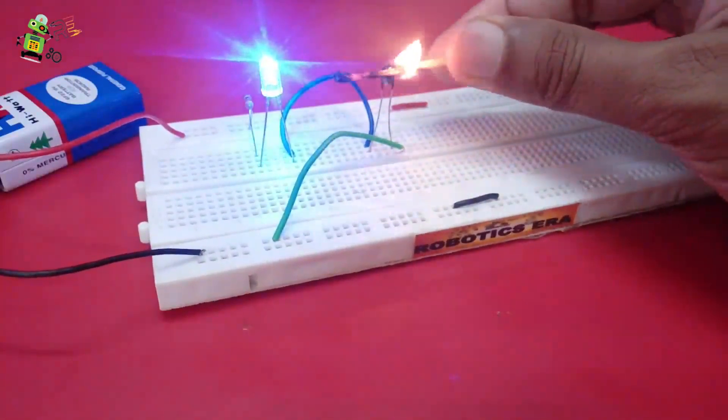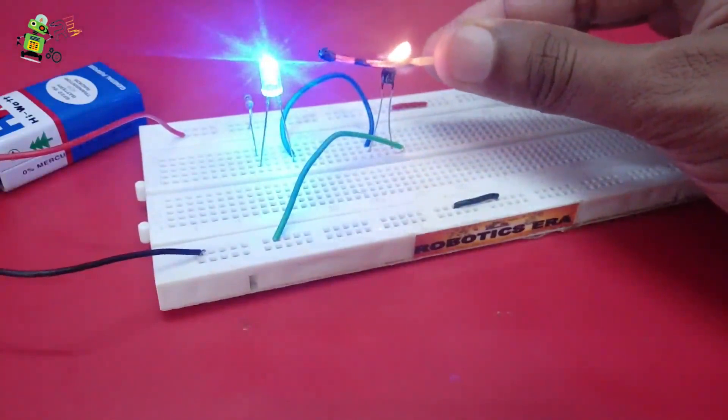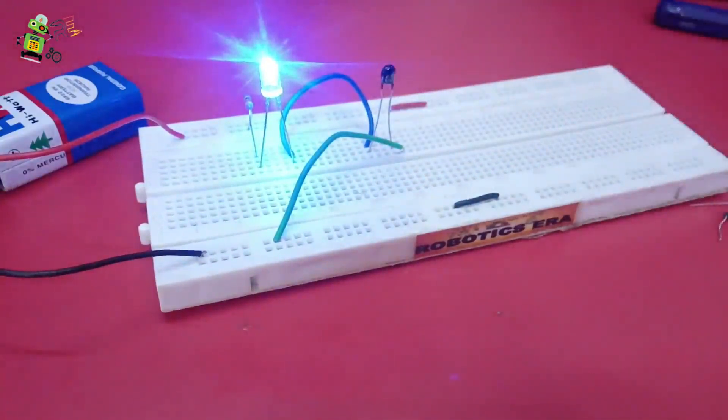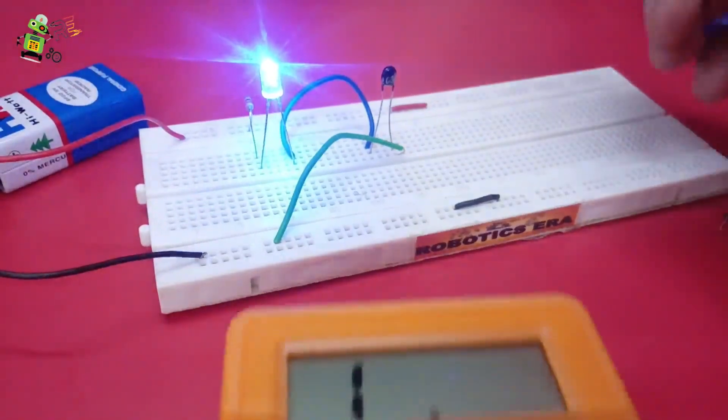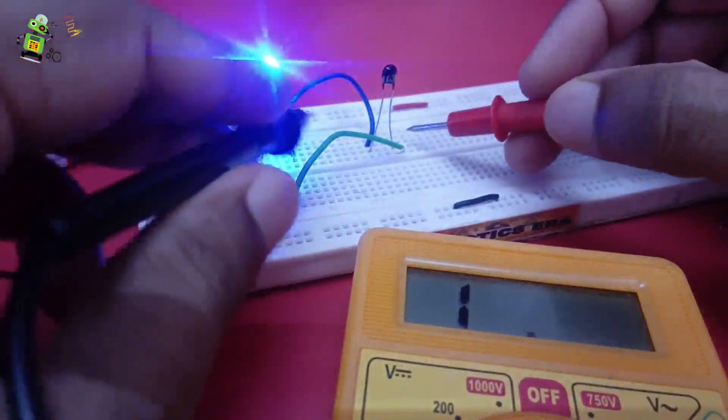As you can see, LED is becoming brighter and brighter. Okay. Once this thermistor becomes cool, it will make LED glow lower.